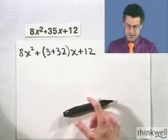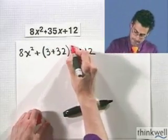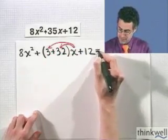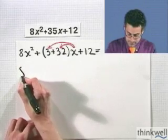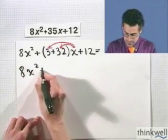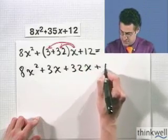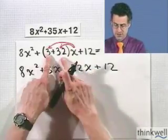Well, now all I'm going to do is distribute the x. No problem. And let math take its course. 8x² + 3x + 32x + 12. So I just distributed that x across here.